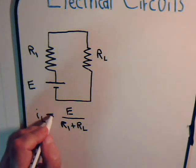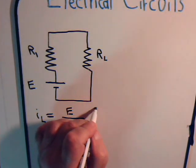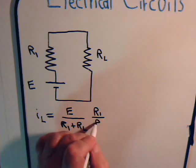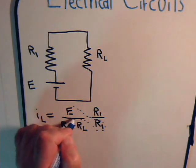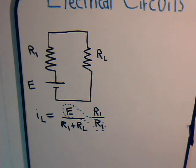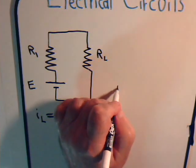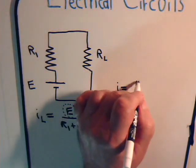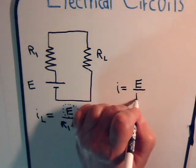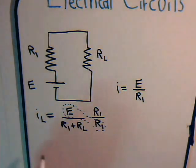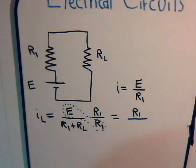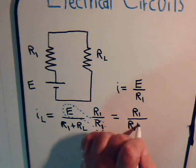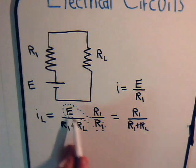Now let's multiply this equation by 1, specifically by R1 divided by R1. So E divided by R1 — the voltage divided by a resistance — let's just call that I for the moment. So I equals E divided by R1, and we get IL equals I times R1 divided by R1 plus RL.